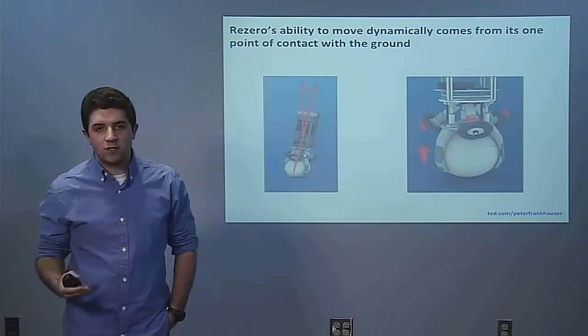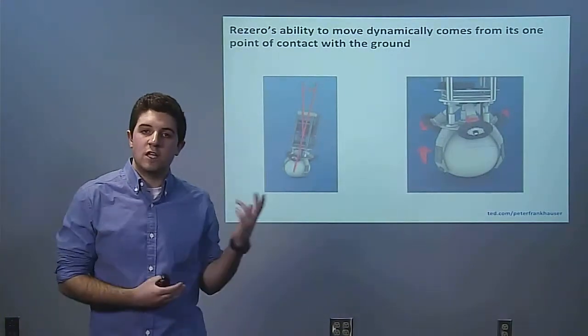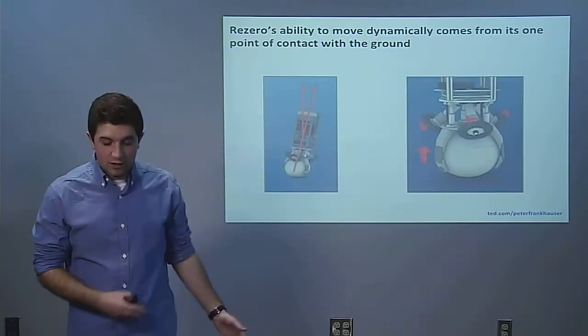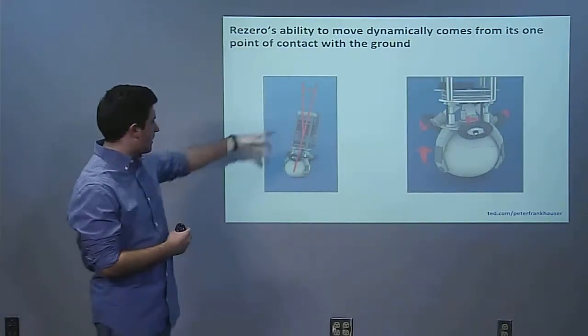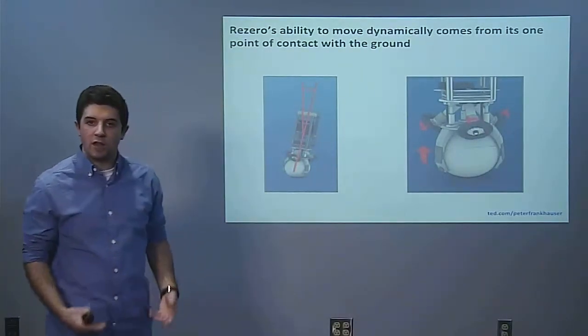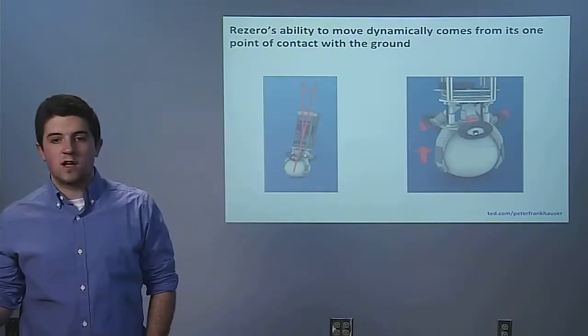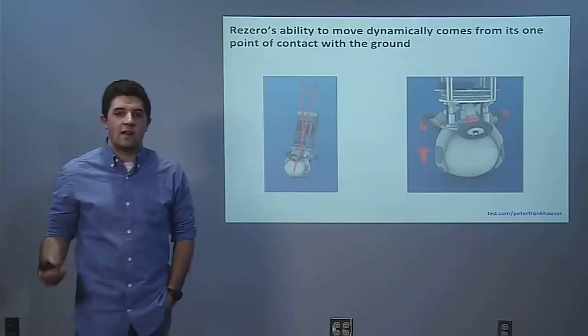One hundred and sixty times per second, every second, ReZero takes a measurement of its pitch angle relative to the ground. ReZero then takes that information, sends it to its motors and tells its motors to adjust three wheels on the ball that it balances on. Then it stabilizes itself and it does this a hundred and sixty times a second, every second.